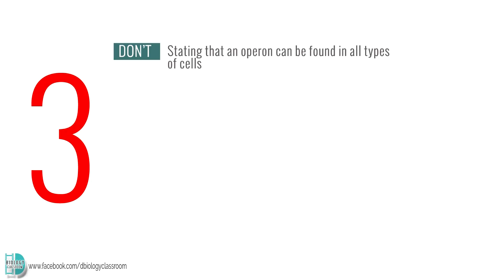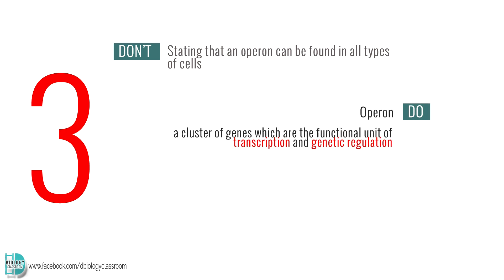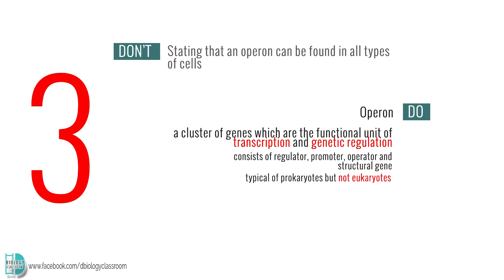Number 3: Stating that an operon can be found in all types of cells. An operon is a cluster of genes which are the functional unit of transcription and genetic regulation. It consists of a regulator, promoter, operator, and structural gene. It is typical of prokaryotes but not eukaryotes.